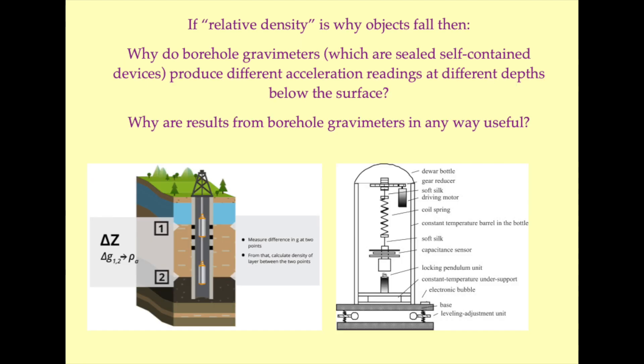The same principle is illustrated by borehole gravimeters. These are sealed, self-contained units that are dropped down the inside of a hollow pipe. Yes, the density of the medium inside such a gravimeter will vary as a function of pressure, but it will not be in any way responsive to the distribution of mass around the gravimeter. Nonetheless, these gravimeters are used by mineral exploration companies to detect subsurface ore deposits.